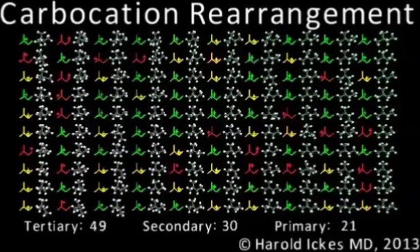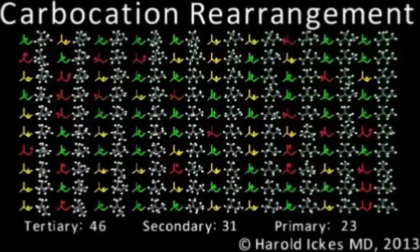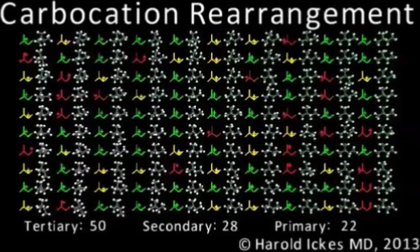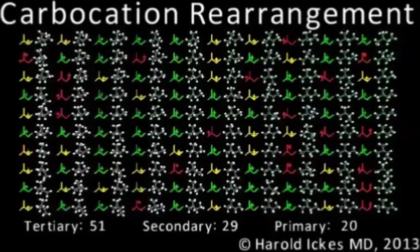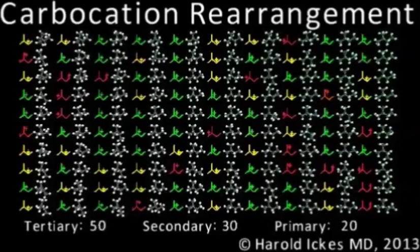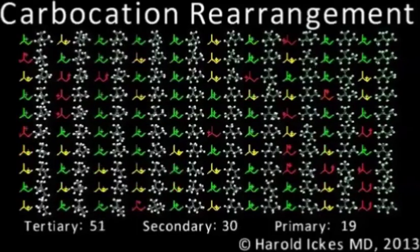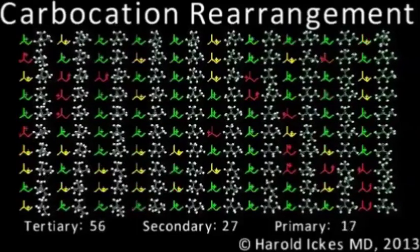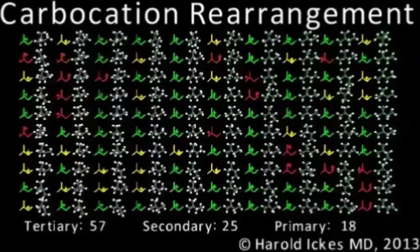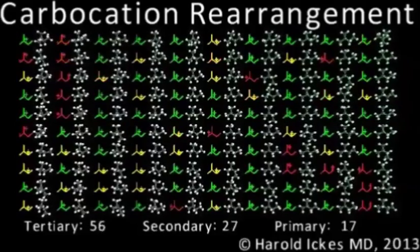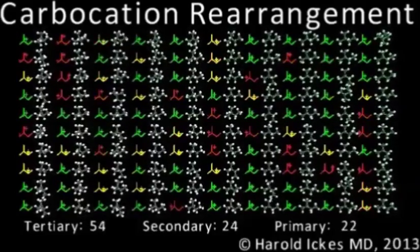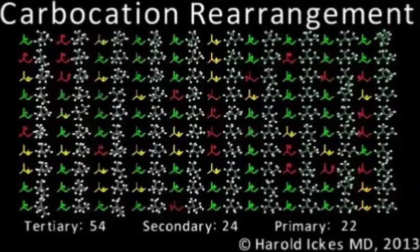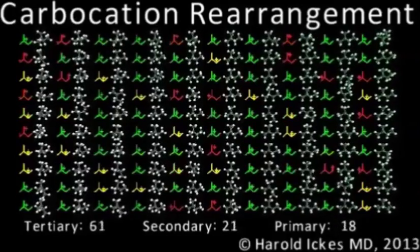Here we have 100 similar molecules. Notice how over time, more and more begin to convert into the green stable tertiary state. At any given instant, one green might switch to a yellow or to a red. But even so, another will be switching back to green.